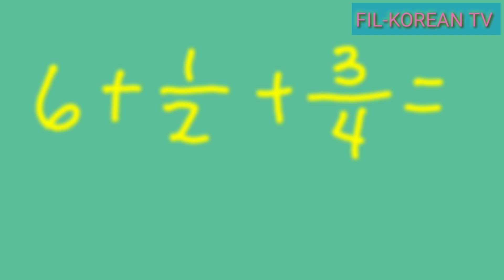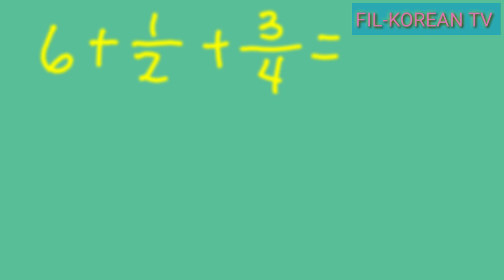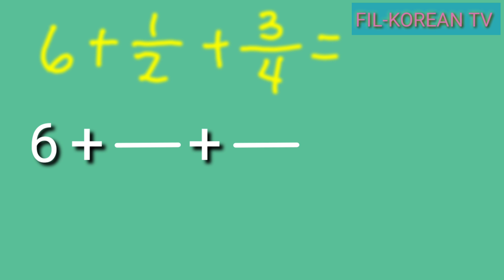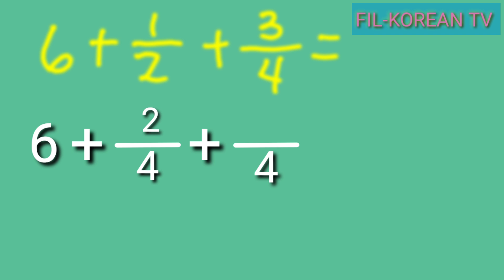We do this by getting the LCD of two and four. Copy the whole number six, then get the LCD of two and four. The LCD of two and four is four, so let's write the LCD four. Next, divide the LCD by the denominators and multiply by the numerators to get the new numerators. Four divided by two equals two, times one — the answer is two. Next, four divided by four is one, times three equals three. The fractions now have the same denominators.